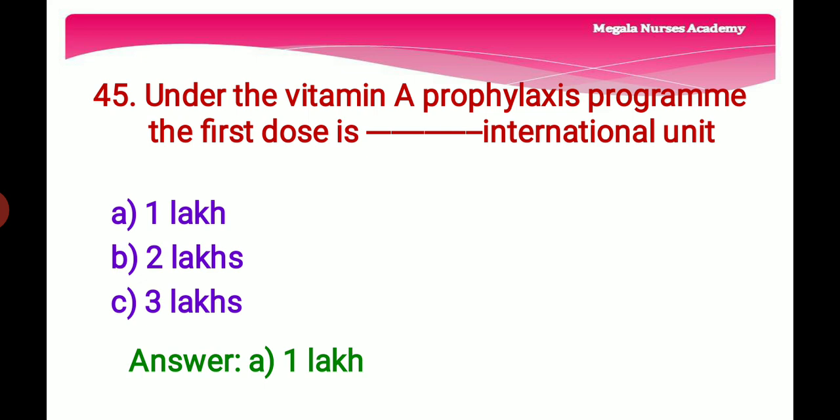Forty-fifth question: Under the Vitamin A Prophylaxis Program, the first dose is — Option A: 1 lakh international units, Option B: 2 lakh IU, Option C: 3 lakh IU. The right answer is Option A, 1 lakh international units. If the baby is less than 1 year, 1 lakh IU of vitamin A is given orally to prevent blindness; if more than 1 year, 2 lakhs. The first dose is provided at 9 months along with measles vaccine.